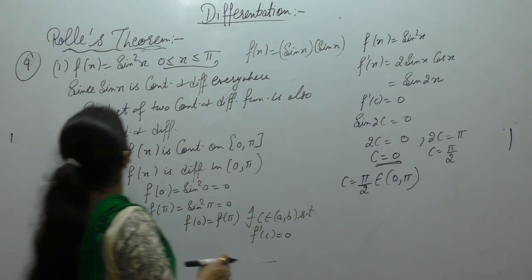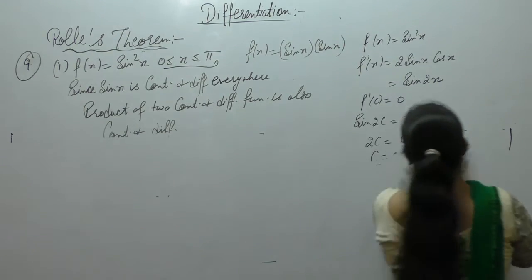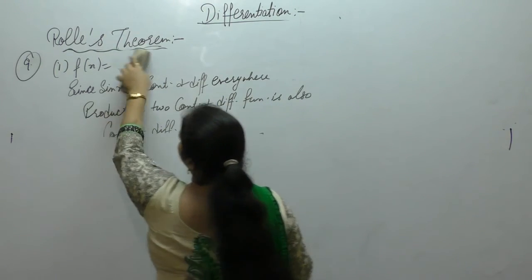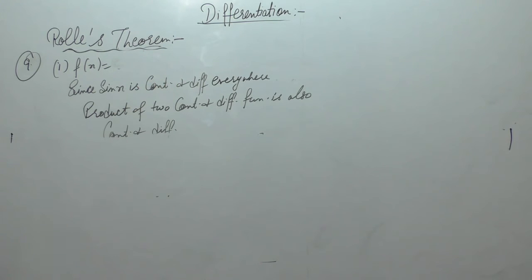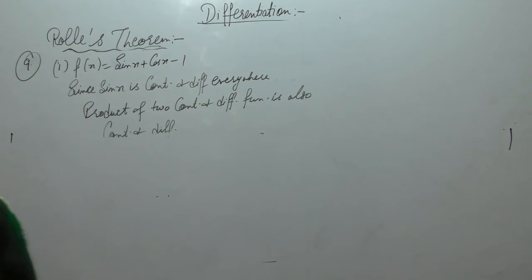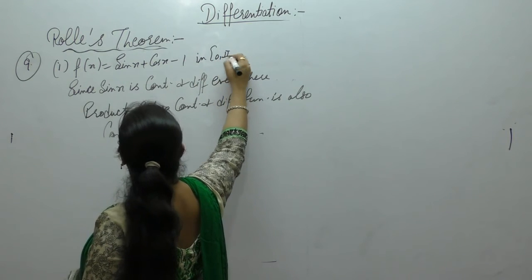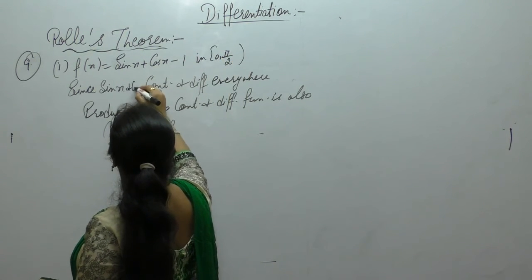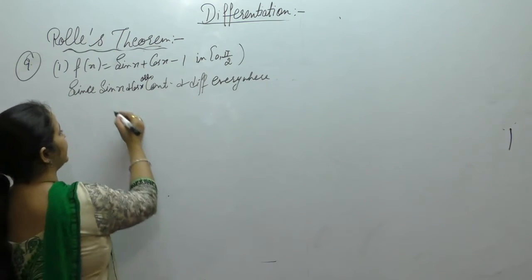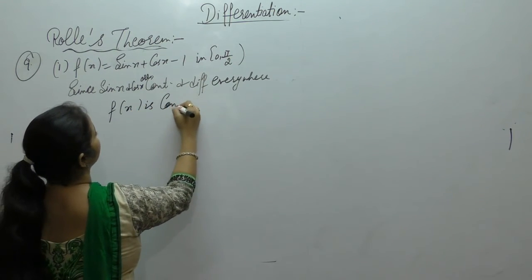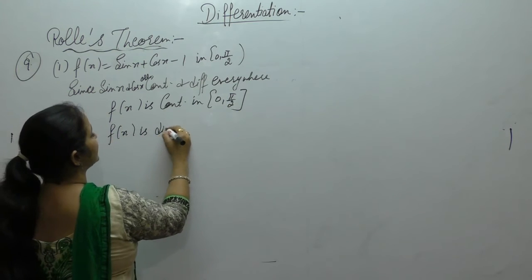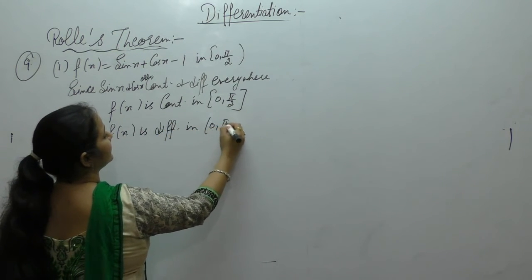Next part: f(x) = sin x + cos x - 1 on [0, π/2]. Since sin x and cos x are continuous and differentiable everywhere, the given function is continuous and differentiable. Therefore f(x) is continuous on the closed interval [0, π/2] and differentiable on the open interval (0, π/2).